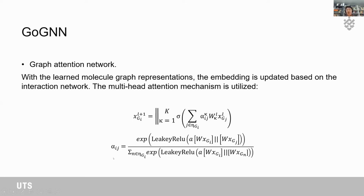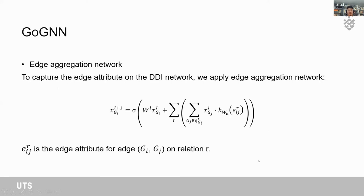The attention coefficient for graph GI and graph GJ is computed using a specific equation. For the edge aggregation network to capture edge attributes on the DDI network, we first linearly transform the representation for graph GI, then aggregate neighbor graphs of GI using the multiplication of GI's representation and the linear transformation of edge attributes on relation R. We sum up all these representations among relations to get the updated representations for graph GI.